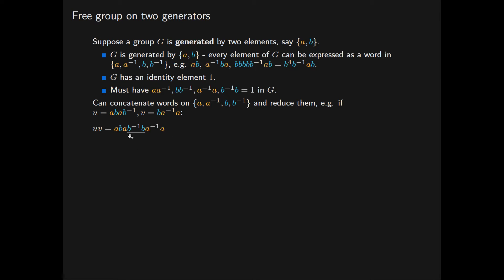We note that we have this expression b inverse b here. This is a subword of the concatenated word uv. We replace b inverse b with the identity element. Now note we have the following subword a a inverse, so we can reduce again to give us the following word aba, which we cannot reduce any further. We call such a word reduced.